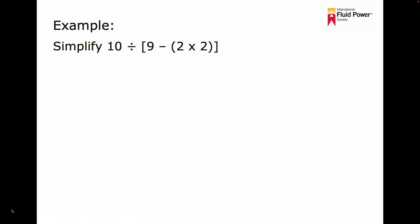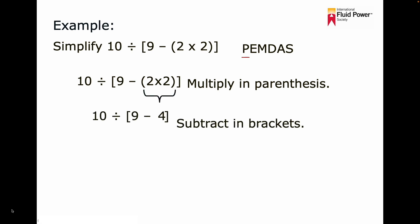In this example, let's simplify 10 divided by bracketed 9 minus parentheses 2 times 2. PEMDAS says that we calculate the number in the parentheses first, so we multiply 2 times 2, which is 4. Then we subtract the numbers in the brackets, which is 9 minus 4, which equals 5. Then we divide 10 by 5, and that gives us the answer, 2.